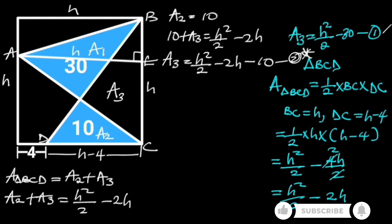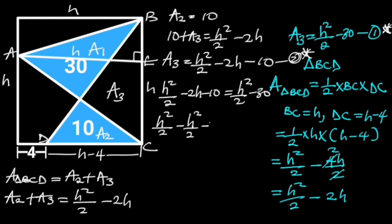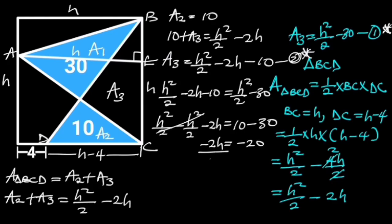Comparing equation 1 and 2, observe that the left side of both equations are equal. So we can say that H squared over 2 minus 2H minus 10 is equal to H squared over 2 minus 30. Collecting like terms, H squared over 2 minus H squared over 2 cancels out, leaving minus 2H equals 10 minus 30, which is minus 20. Dividing through by minus 2, H is equal to 10.